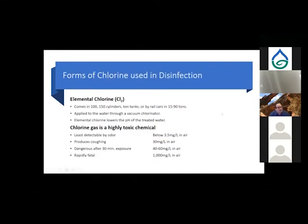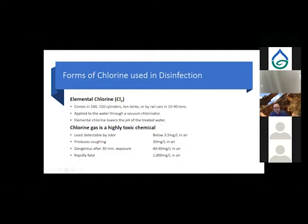Elemental chlorine delivered to your plant can come in 100- or 150-pound cylinders, large ton tanks, or even by rail cars in quantities of 15 to 90 tons at a time. It's applied to the water through a vacuum chlorinator. Think of the cylinders as resembling a large fire extinguisher or a scuba tank. Elemental chlorine, as stated before, reduces the pH in the treated water.